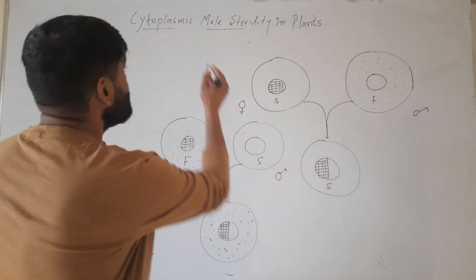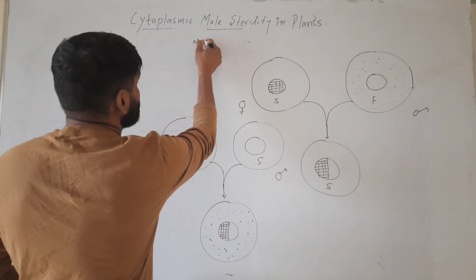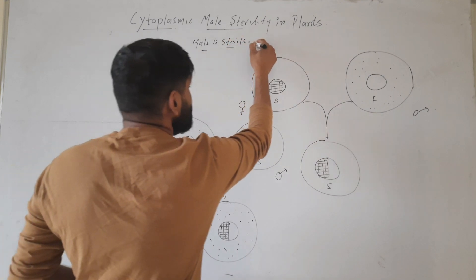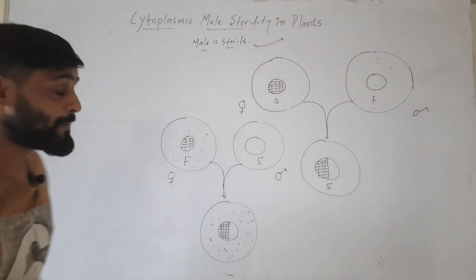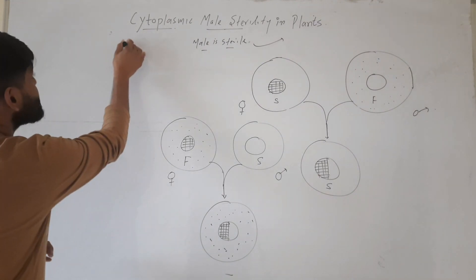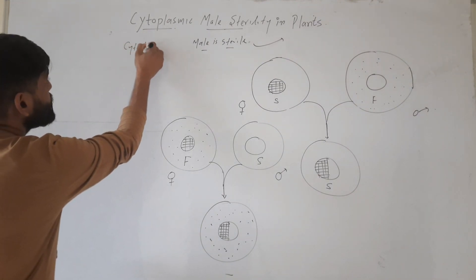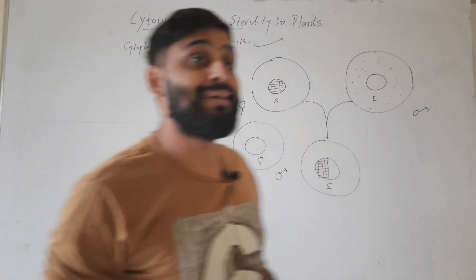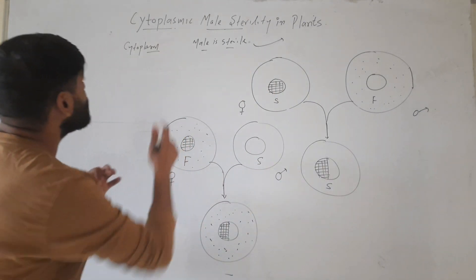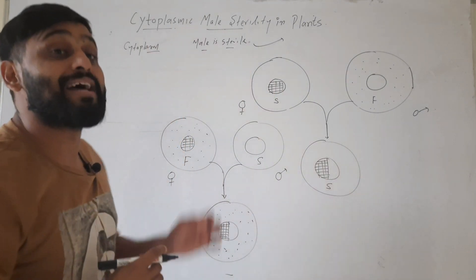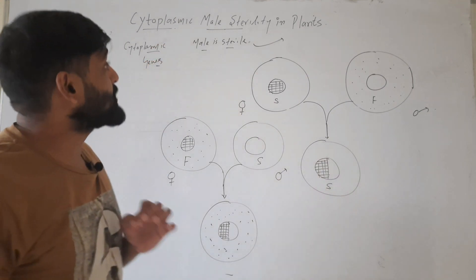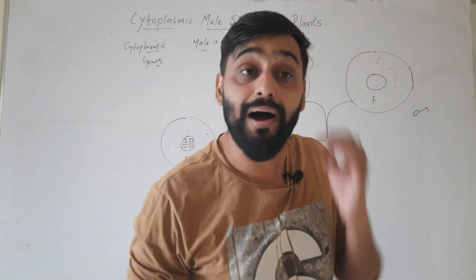Male sterility means the male is sterile, and it occurs in plants. Cytoplasmic here shows that it is due to cytoplasm. So, a male sterility that is found in plants which is due to cytoplasm — means cytoplasmic genes — is called cytoplasmic male sterility in plants.